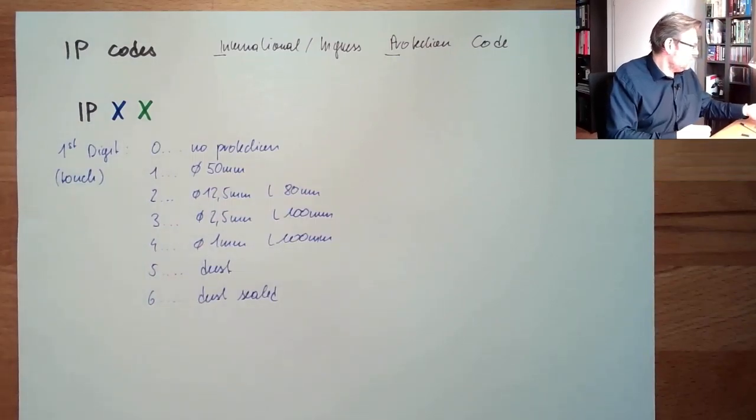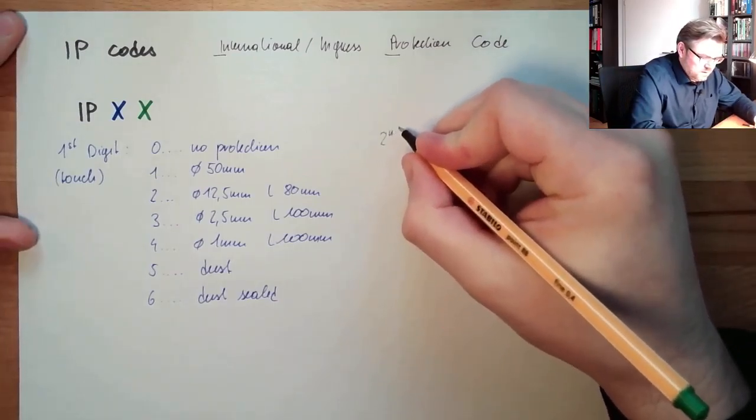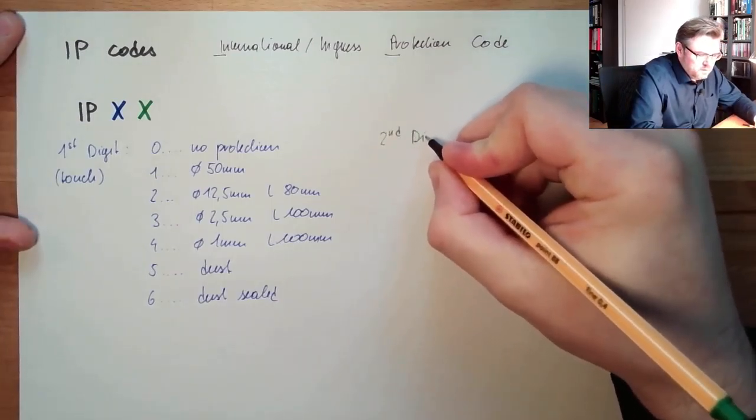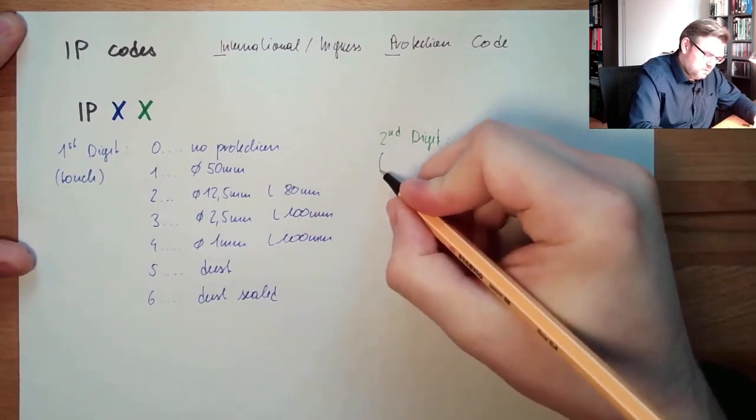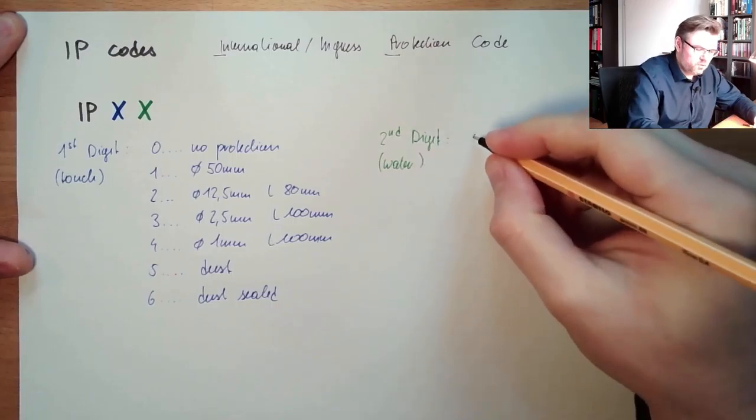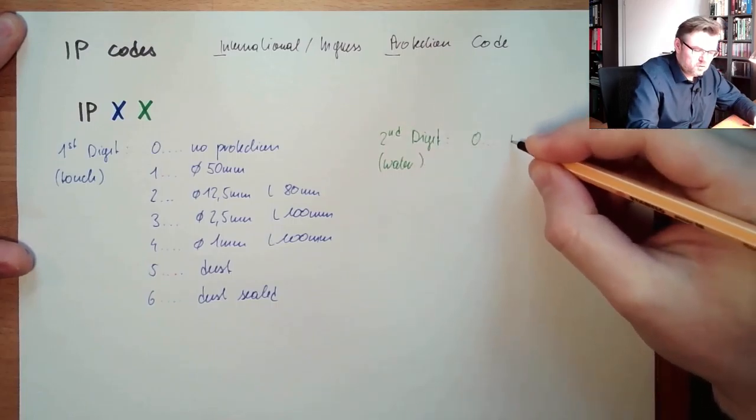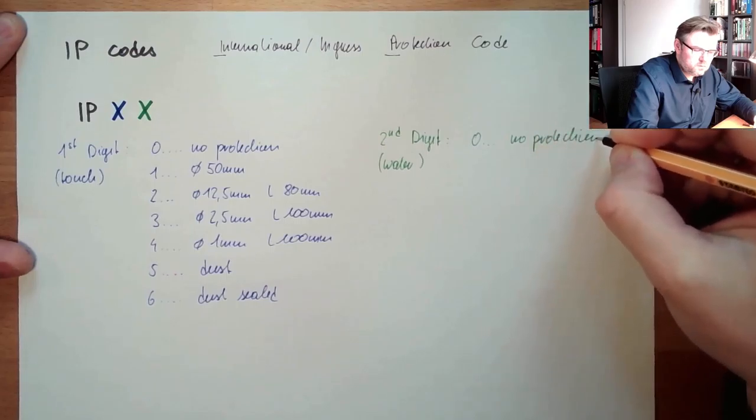The second digit. Second digit, it's about water. Water protection. Zero again means no protection.